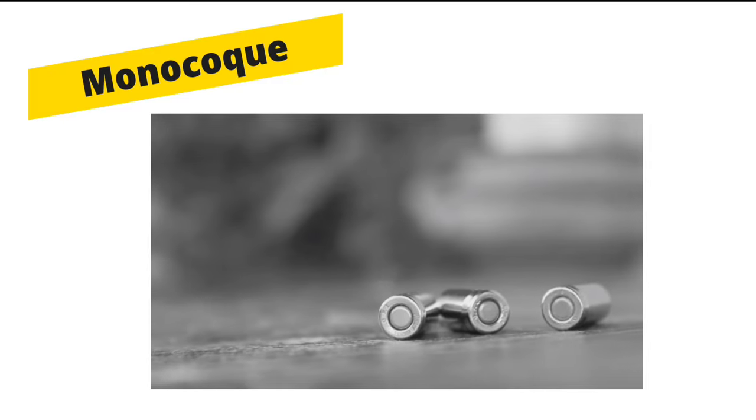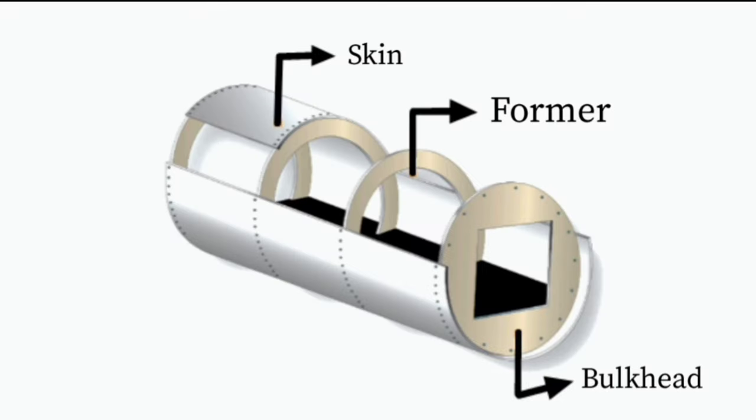Monocoque: mono means single and coque means shell. The name itself says that single body is used. Here, the load is taken by the outer skin of the fuselage. So the strength of the skin must be high enough to resist the loads.